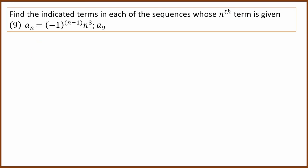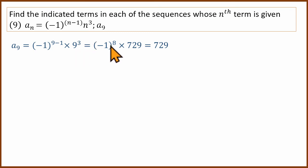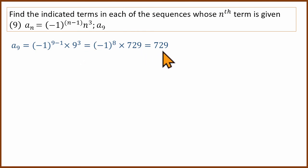For the 9th question: aₙ = (−1)^(n−1) multiplied by n³. We need the 9th term, so substitute n = 9. (−1)^(9−1) = (−1)^8 = 1, since 8 is an even number. And 9 cubed is 729. So the 9th term is 1 × 729 = 729.